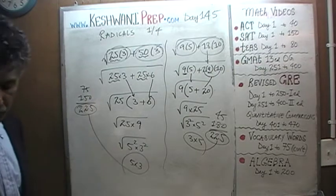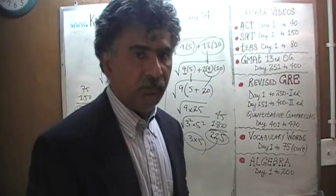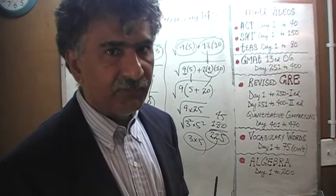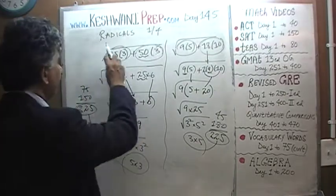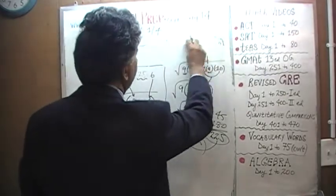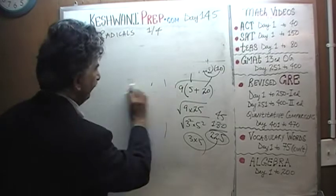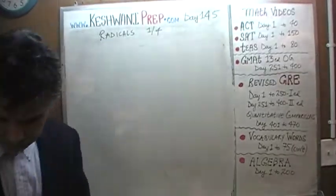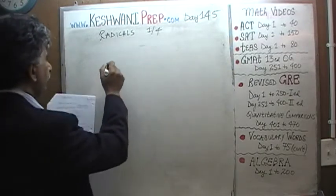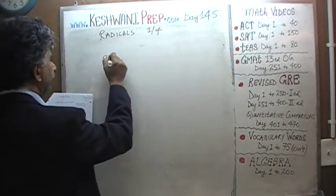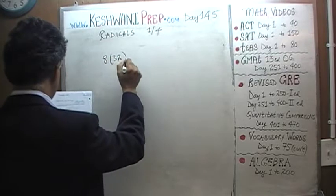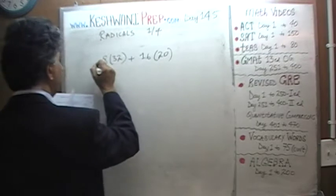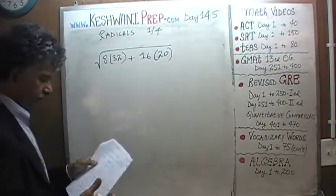The next problem — use the same technique. I want you to learn this method and apply the same rationale. Here is the next problem: the square root of 8 times 32 plus 16 times 20. Go ahead and do it yourself.